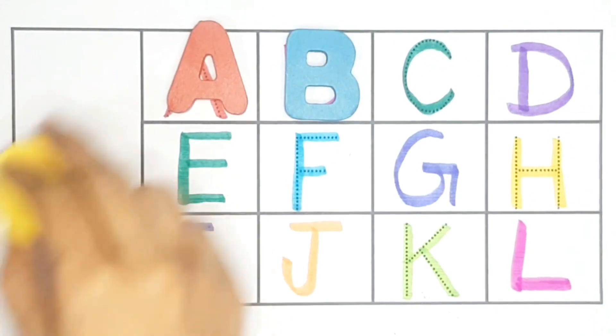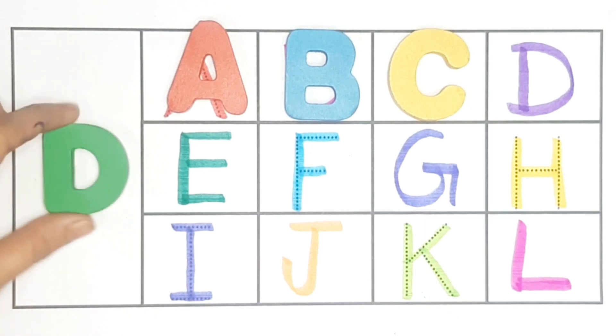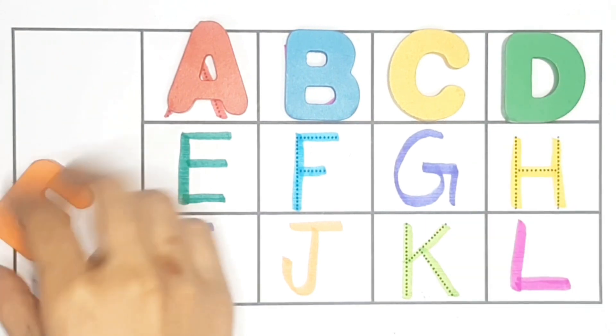B for cat. C. C. C for car. D. D for duck. D. E.